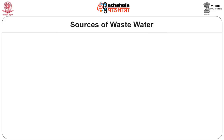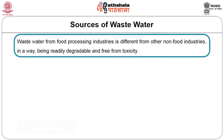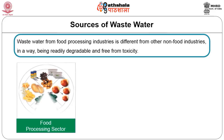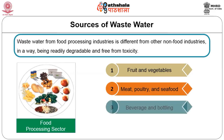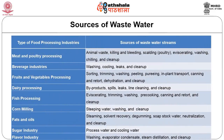The sources of wastewater — wastewater from food processing industry is different from other non-food industries in being readily degradable and free from toxicity. The food processing sector can be classified into four major groups: fruit and vegetables, meat, poultry and seafood, beverage and bottling, and dairy operations. Sources of wastewater include meat and poultry processing, beverage industries, fruit and vegetable processing, dairy processing, fish processing, corn milling, fats and oils, and sugar and flavor industries. A huge amount of water is consumed in processing foods in these sectors and must be treated for safe disposal to the environment.